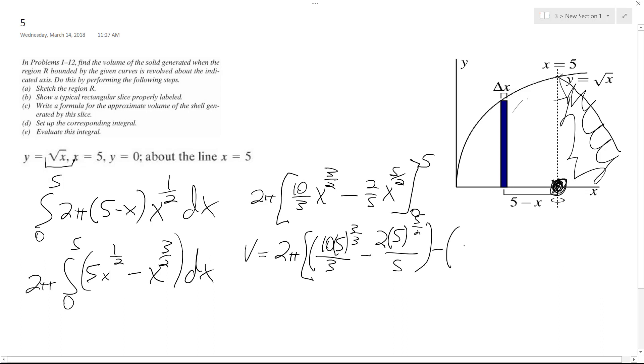And then the nice thing about zero is, I'm not going to plug it in, but we just get zero. So we end up with two pi times quantity fifty root five over three minus fifty root five over five.